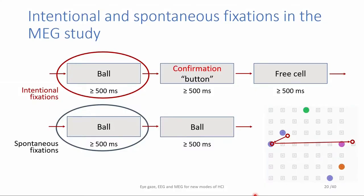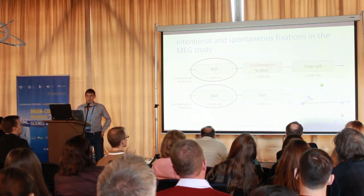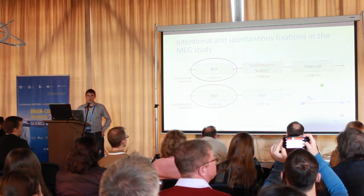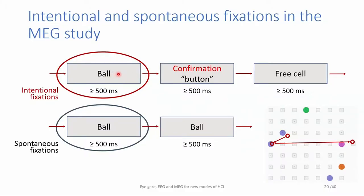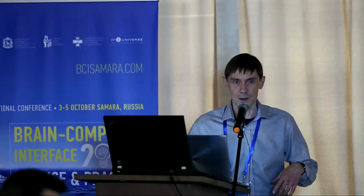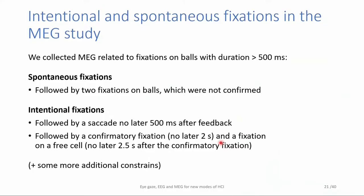We need to be sure participants really intended to make a move when looking at the ball. We therefore collect intentional fixations confirmed quickly, and spontaneous fixations not followed by confirmation — cases where the participant just looked at another ball after fixating the first, indicating probably no intention. Several rules were designed to make the datasets of spontaneous and intentional fixations more clearly separable.